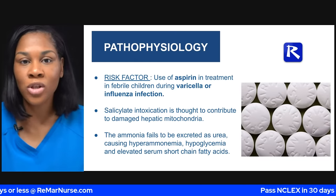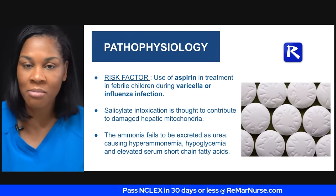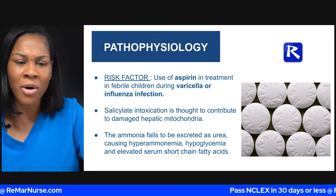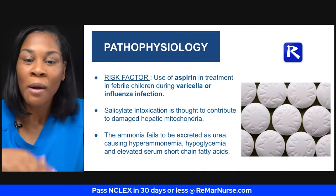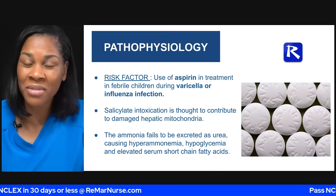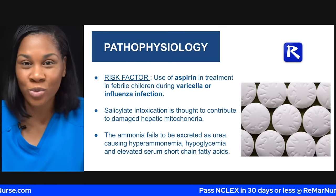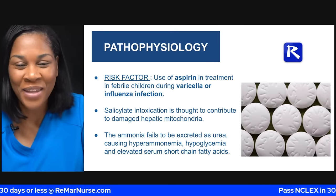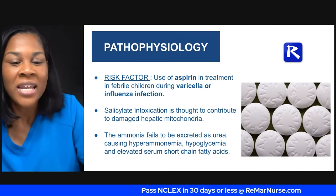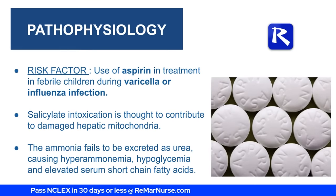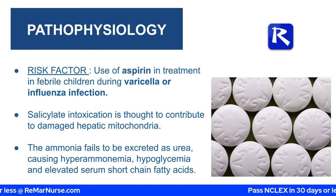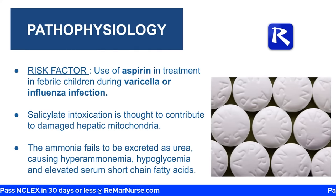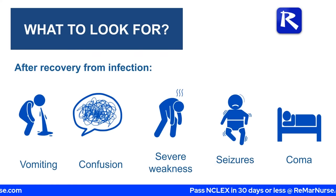That's why we put liver patients on a low-protein diet — protein that is not excreted becomes ammonia, and ammonia is a poison. Imagine that freely circulating in the body. When ammonia fails to be excreted as urea, it can cause hyperammonemia, which can then cause hypoglycemia for the patient and elevated serum short-chain fatty acids. For our pediatric patients who are really sick, they're vomiting, confused, weak, and can have seizures and fall into a coma. It can be very deadly.